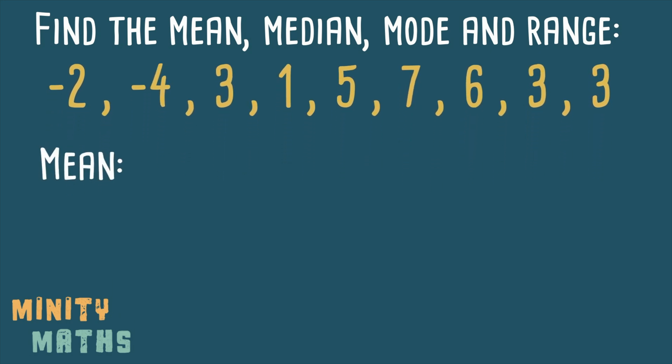To find the mean we firstly add all of the numbers up, this equals 22. We then divide by the total amount of numbers in the list. There are nine numbers in this list, so we divide 22 by 9. The answer is 2.4 recurring.